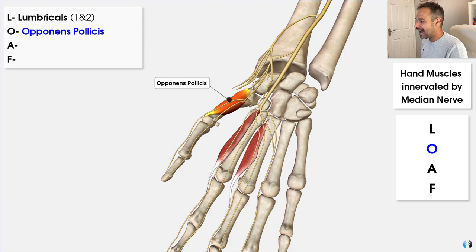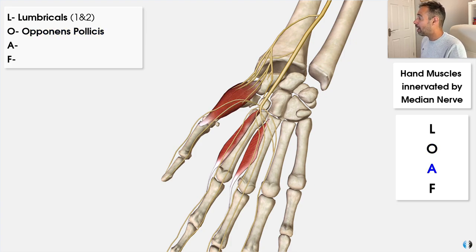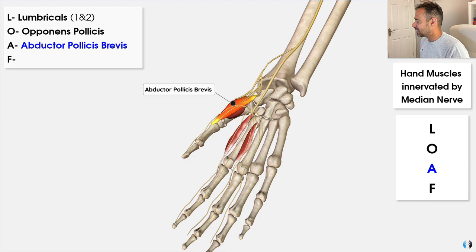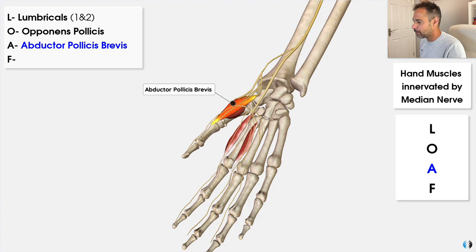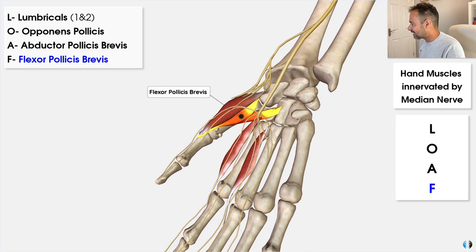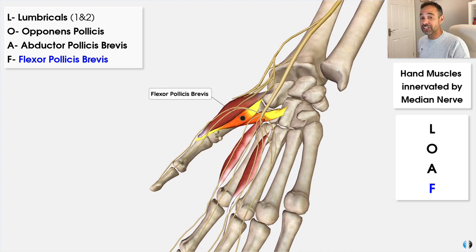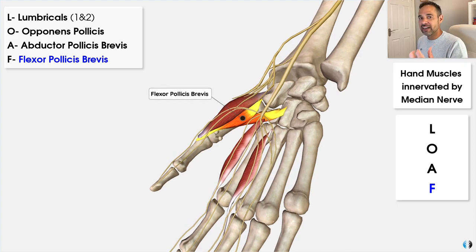Then we have A, which stands for abductor pollicis brevis. Pollicis relates to the thumb and abductor relates to abduction, so that is the chief responsibility of this particular muscle. And then we have F, which stands for flexor pollicis brevis. Once again, pollicis relating to the thumb, and this muscle is responsible for flexion of the thumb.